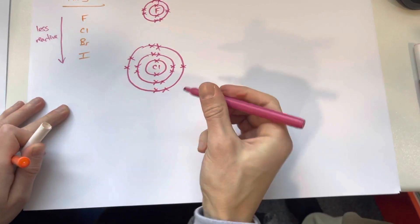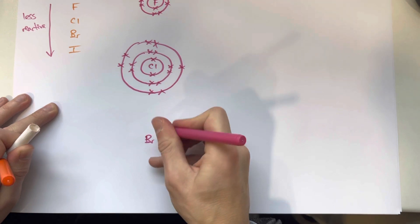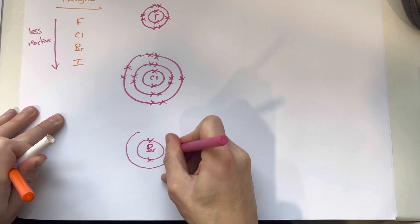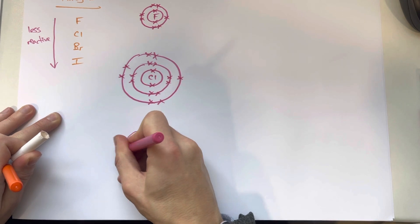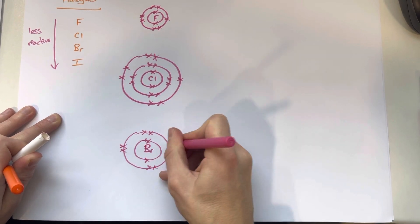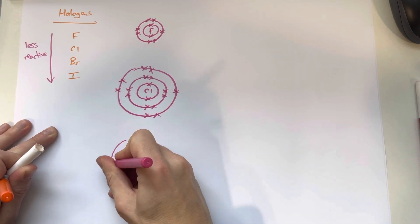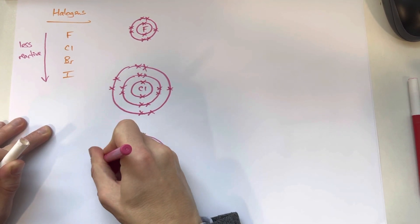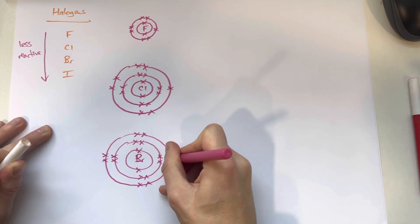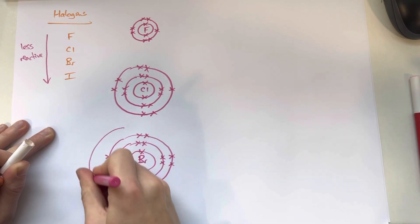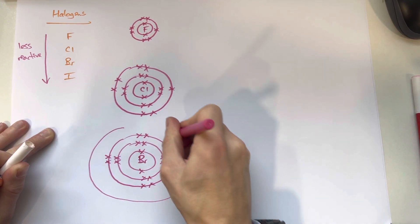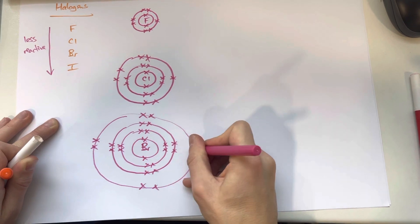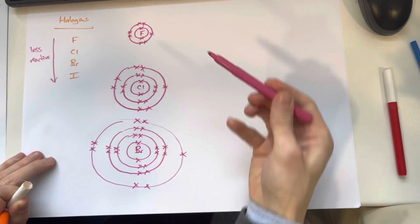Can we do bromine as well? Absolutely. Bromine is one further down, so bromine has got an extra shell again — four shells in total, because it's one period below. The period number tells you how many shells it has. You can see bromine is actually really quite big.